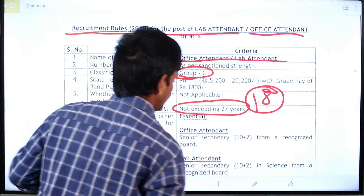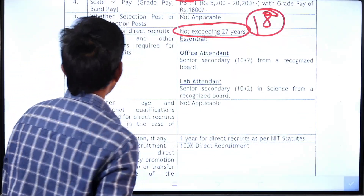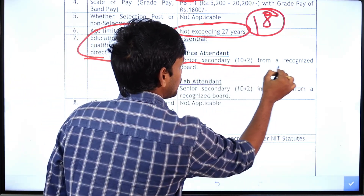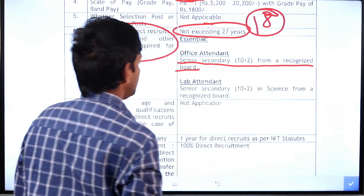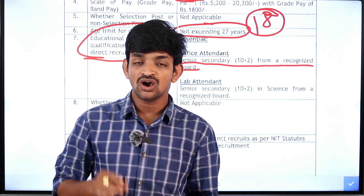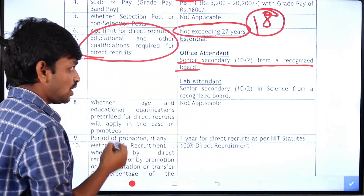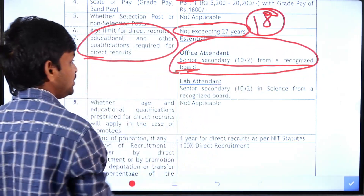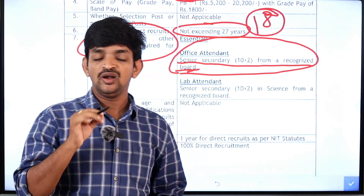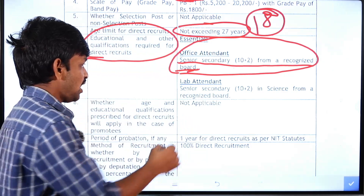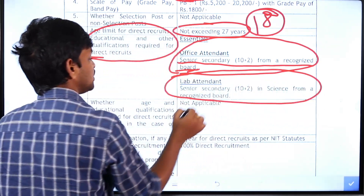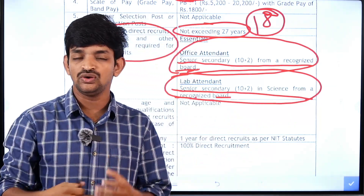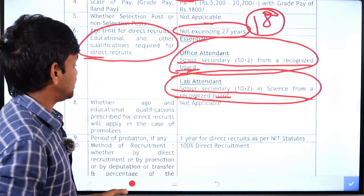For the Office Attendant or Lab Attendant post, the education qualification is Senior Secondary (10+2) from a recognized board with a Science background. The intermediate pass must be in science — specifically MPC or BPC branches and groups.